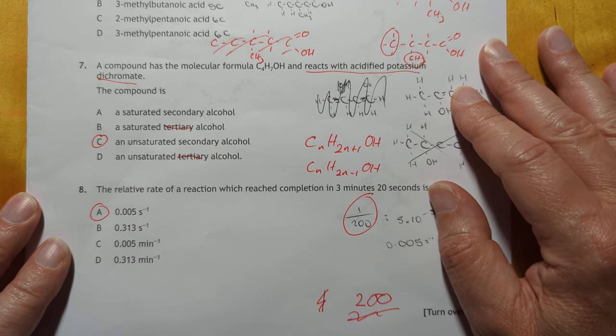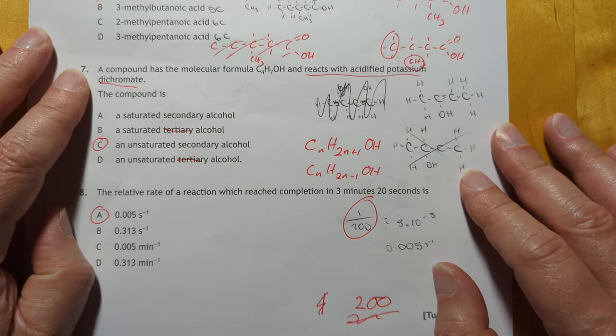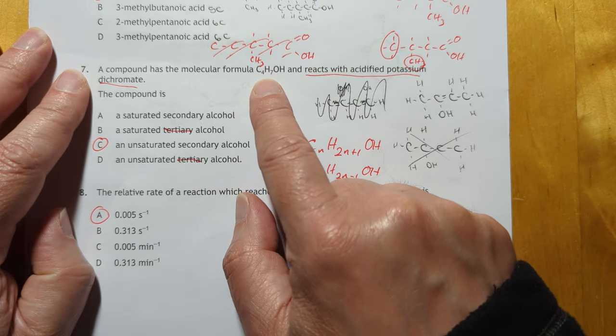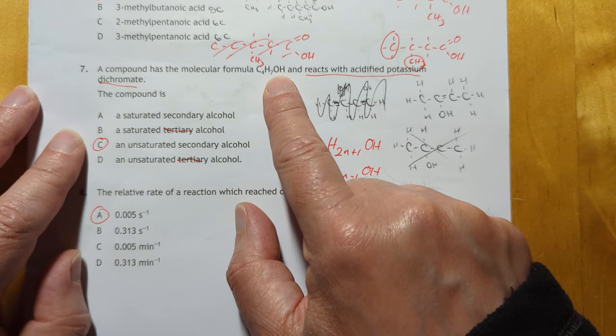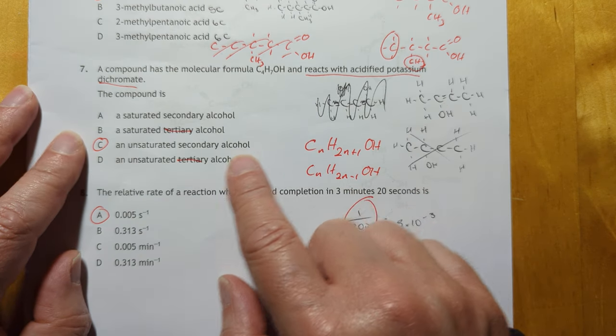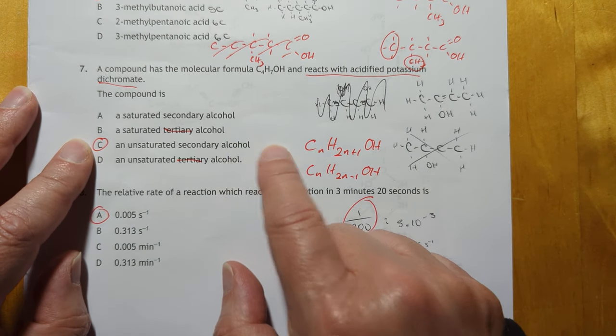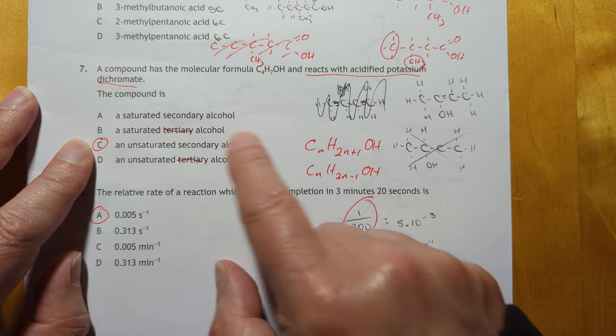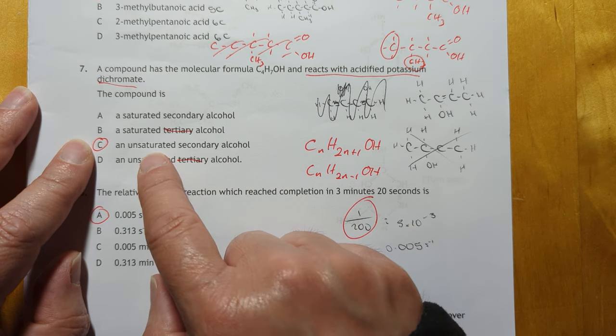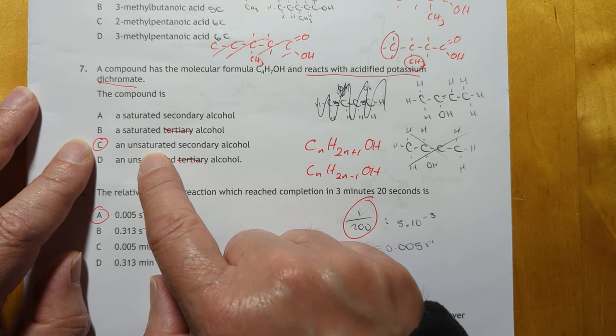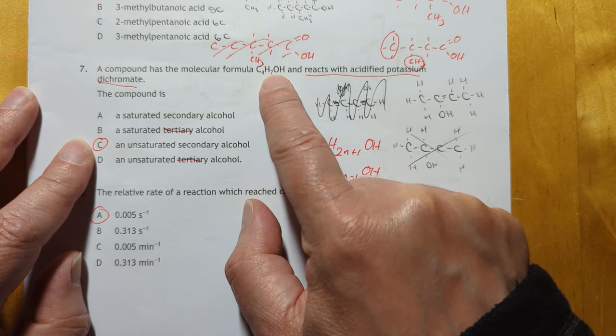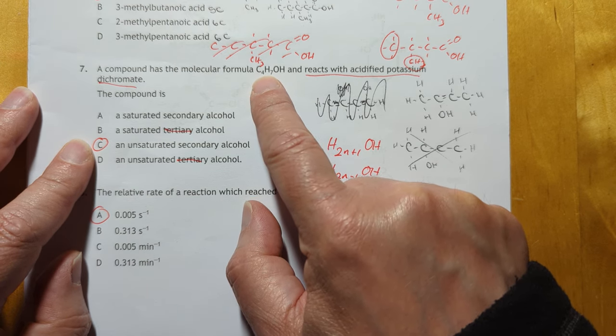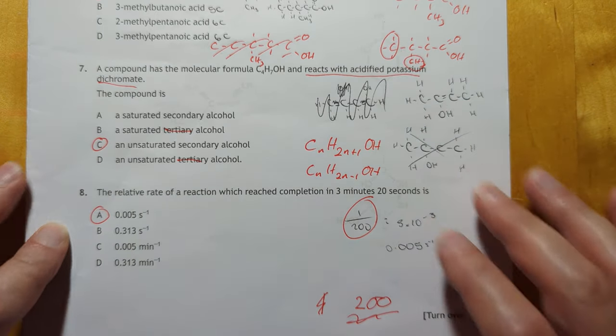Can we fit 7, 8? Yes, we can on the screen. A compound has a molecular formula C4H7OH and reacts with acidified potassium dichromate. So therefore, it is an alcohol. The compound is an alcohol. Fine. But it can't be tertiary. It can only be secondary. And because this is not CnH2n+1, it's CnH2n-1, so therefore it's unsaturated. That's quite tricky.